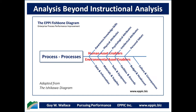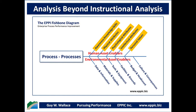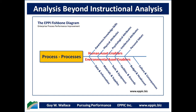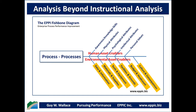This fishbone diagram is adapted from the Ishikawa diagram from the 1950s in Japan. It takes a look at the process or processes, the human assets that enable that process, and the environmental assets that enable that process. The first variable in a process performance orientation is to look at the process and processes themselves — are they designed to meet the stakeholder requirements? Next, we can look at what the environmental assets are and any gaps that prohibit meeting the needs of the process.